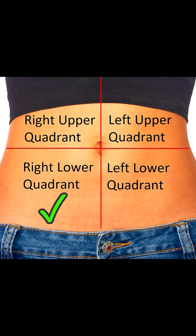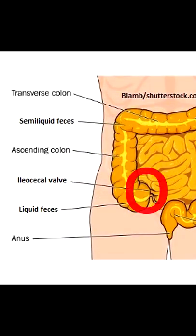When you go to auscultate, you want to start in a specific place: the right lower quadrant. The reason for this is because this is normally where you should hear bowel sounds, as the ileocecal valve is there, which connects the small and large intestine.